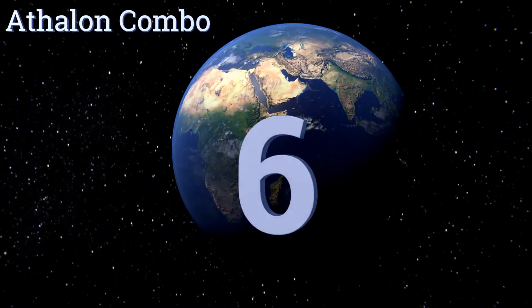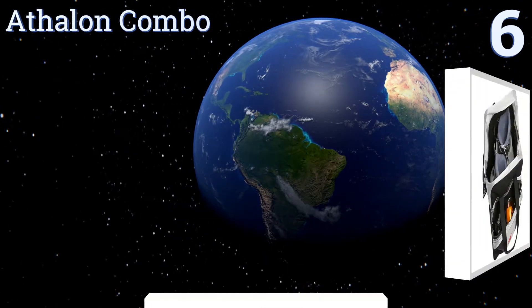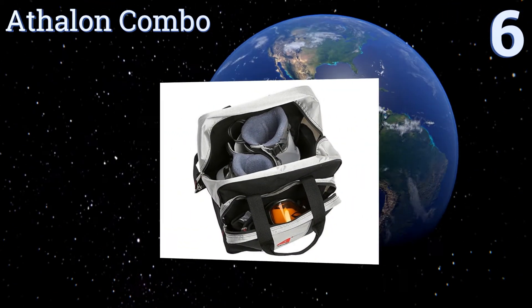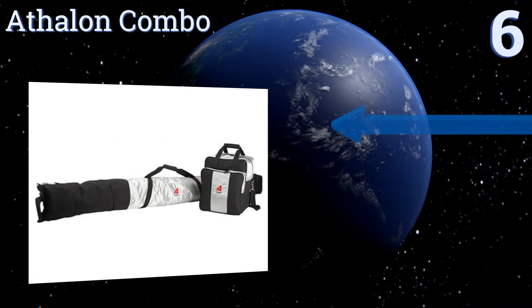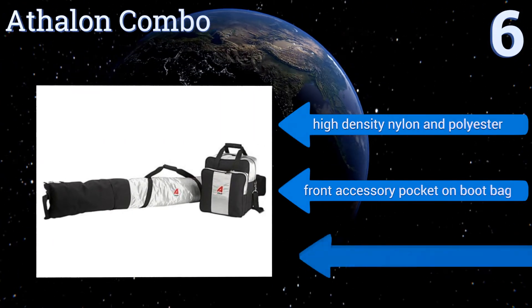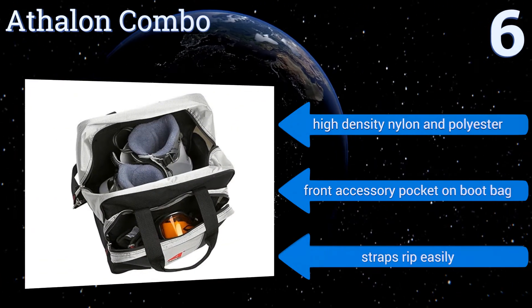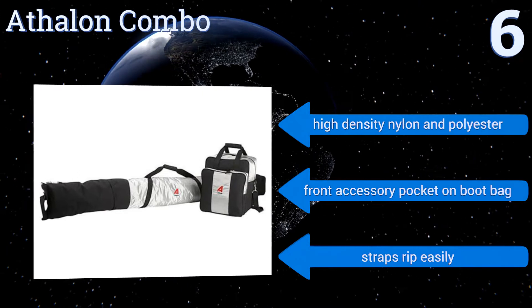At number six, coming with one bag for your runners and one for your boots at a price equal to most other single sacks, the Athalon Combo is just a great value. It's not the most rugged or well designed of course, but it should be enough to satisfy the recreational sportsman. It's made from a high density nylon and polyester with a front accessory pocket on the boot bag, however the straps rip easily.